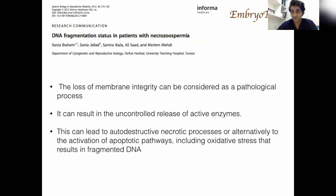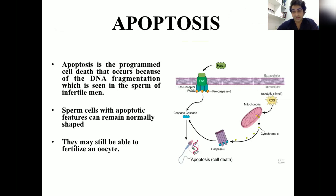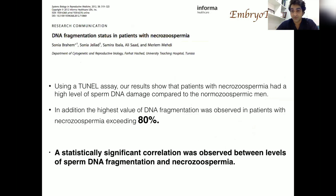A paper published in 2012 talks about this, stating that membrane integrity can be considered a pathological process. This can result in uncontrolled release of active enzymes and activation of apoptotic pathways like oxidative stress, resulting in high DNA fragmentation index (DFI). Thus apoptosis can lead to higher DNA fragmentation. The same paper used the TUNEL assay and found DNA fragmentation exceeding up to 80% in necrozoospermia, with a statistically significant correlation between sperm DNA fragmentation and necrozoospermia.